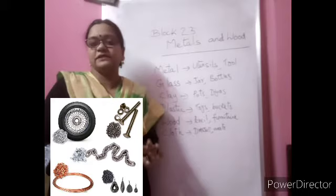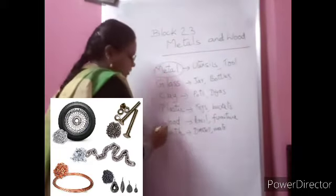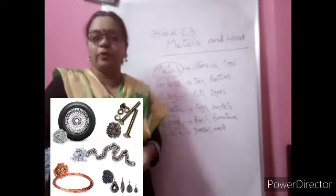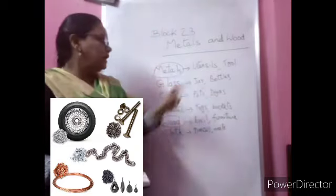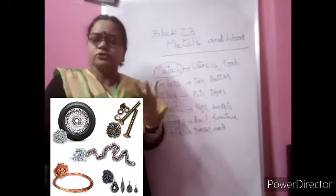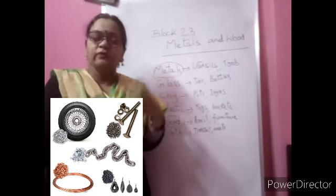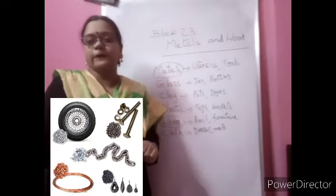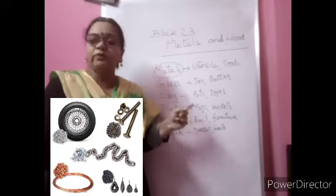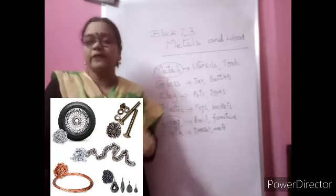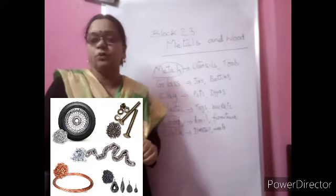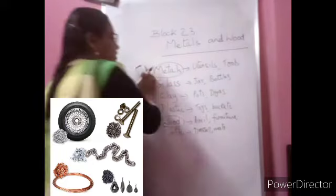In this lesson we are going to learn more about metals and wood. Both are very important — that is why it is given as a project. When we say utensils and tools are made up of metal, we need to understand what property metals have. We cannot make a hammer using cloth or plastic, so we need to understand the specific properties of metals that make them useful.